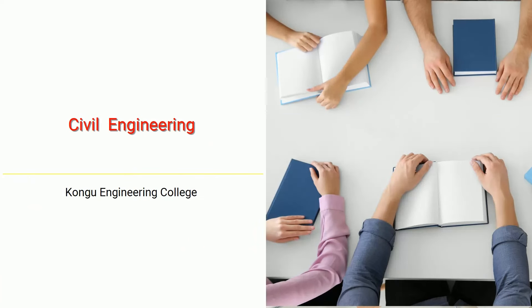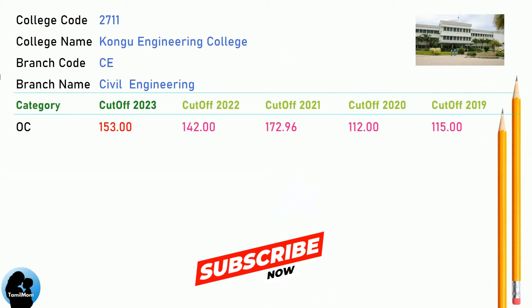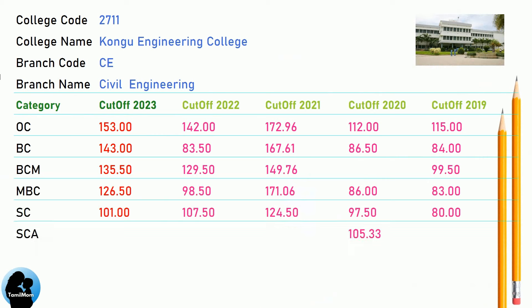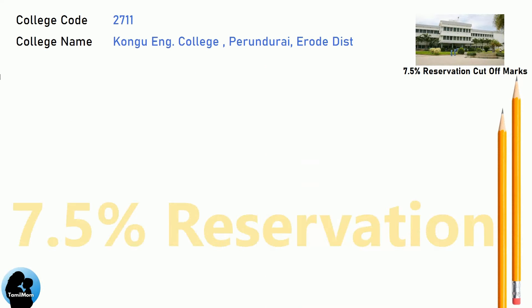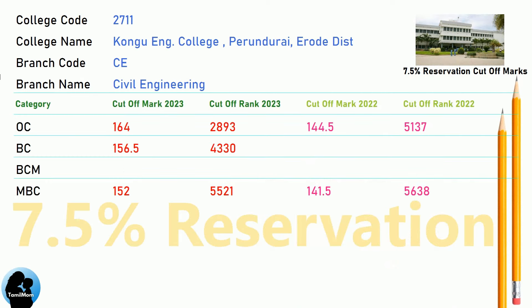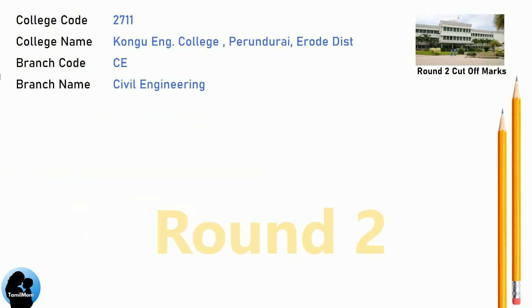DNA Cut-Off for Kongu Engineering College in Civil Engineering. DNA 7.5 Reservation Cut-Off for Kongu Engineering College in Civil Engineering. DNA Round 2 Cut-Off for Kongu Engineering College in Civil Engineering.